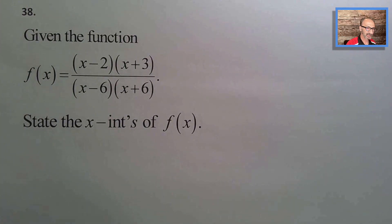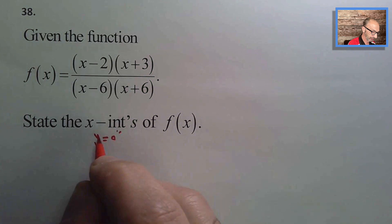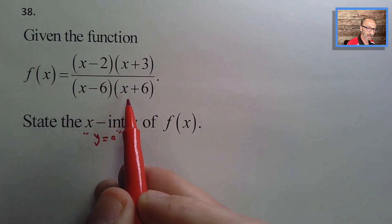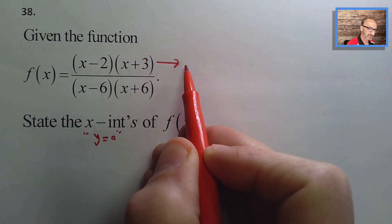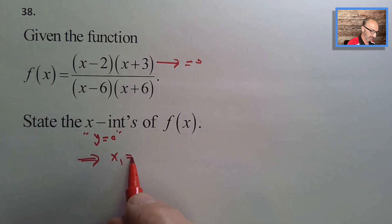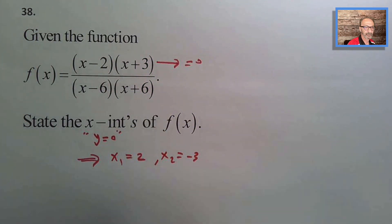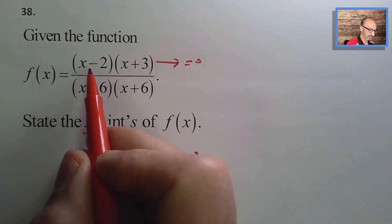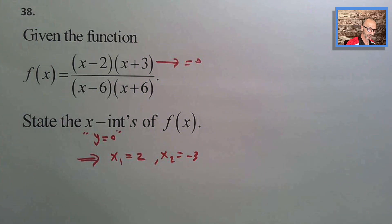Number thirty-eight: state the x-intercepts of a new function. Setting the numerator equal to zero, we get two x-intercepts: x₁ = 2 and x₂ = −3. These factors are not common with the denominator, so both are valid x-intercepts.